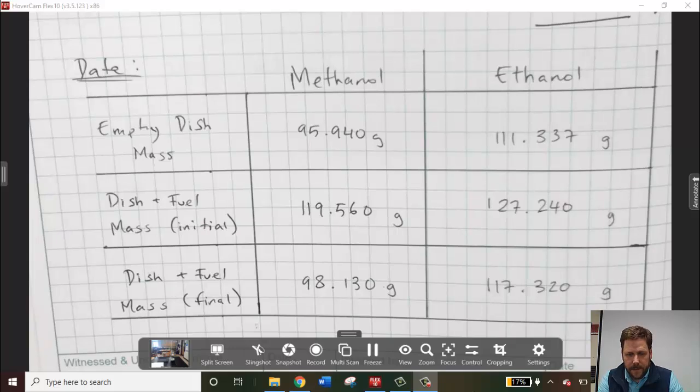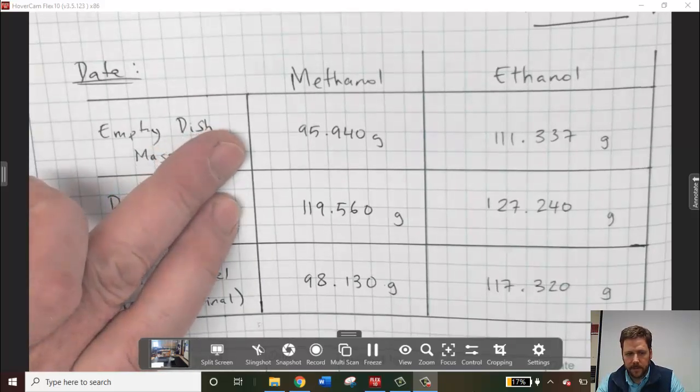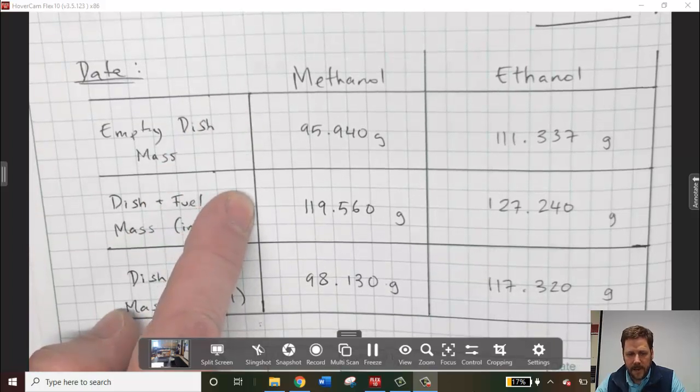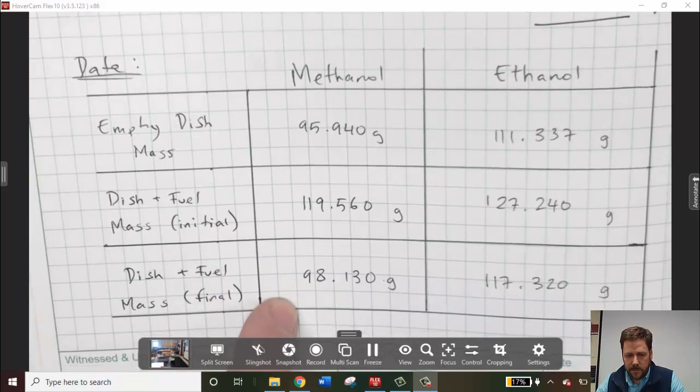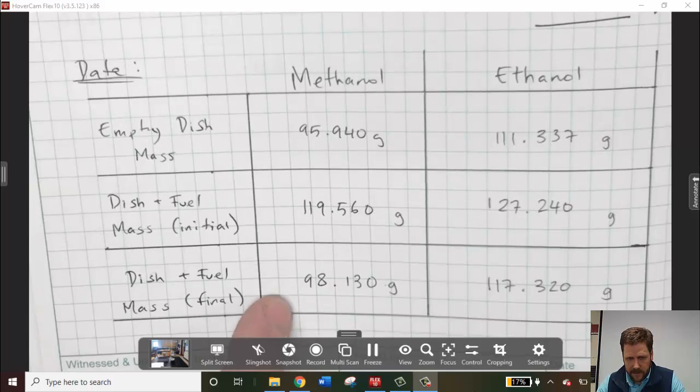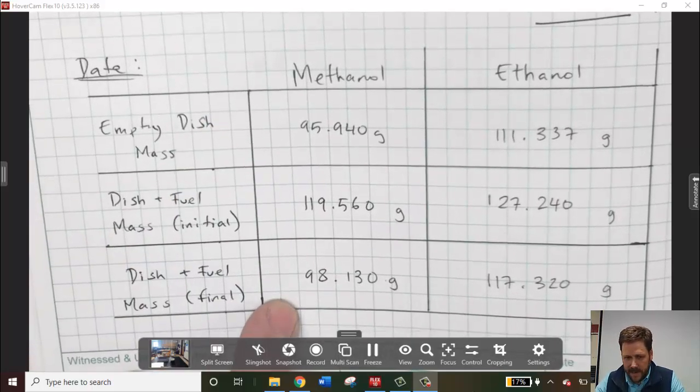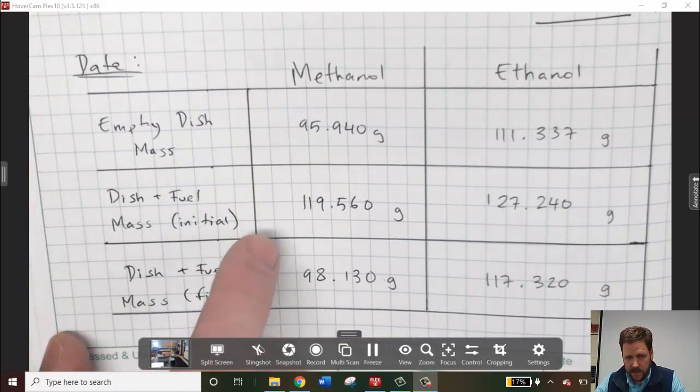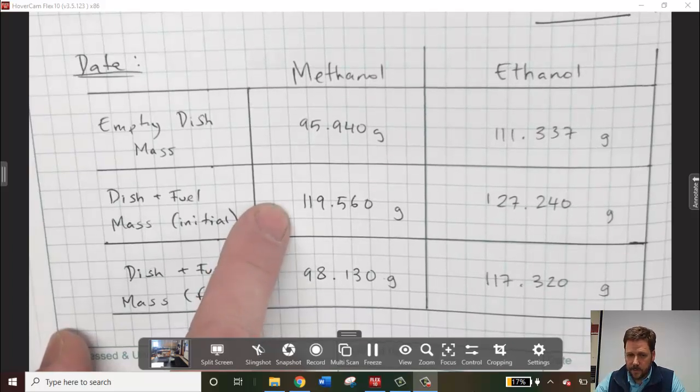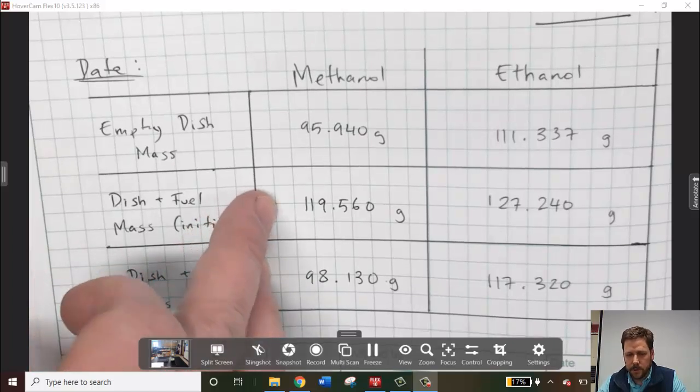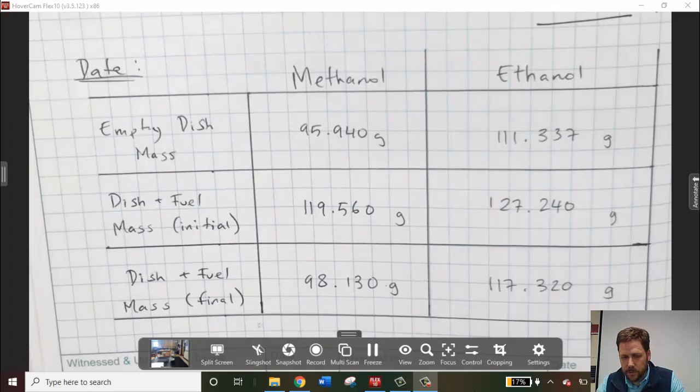Here's the data that I spoke about earlier. You saw me write these two numbers down before: the mass of the empty dish, the mass of the dish and the fuel before we lit it, and this is the mass of just the ashes in the dish, so to speak. The fuel remaining and the ashes in the dish combined with the mass of the dish. Of course, subtracting this number from the empty dish mass would give us the mass of just the ashes remaining. Subtracting this mass from the empty dish mass would give us the amount of fuel that we started with.